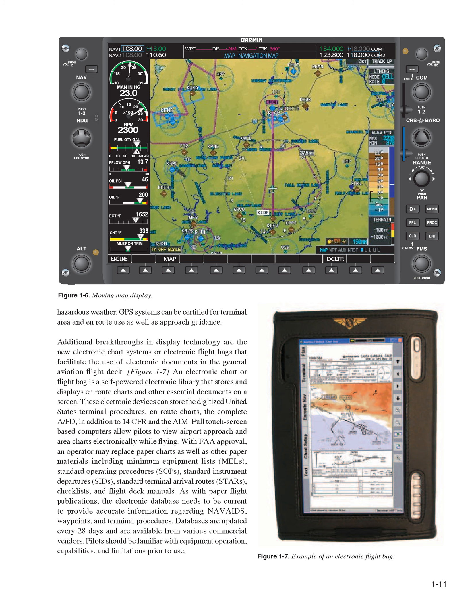These electronic devices can store the digitized United States Terminal Procedures, on-route charts, the complete A/FD, in addition to 14 CFR and the AIM. Full touchscreen-based computers allow pilots to view airport approach and area charts electronically while flying. With FAA approval, an operator may replace paper charts as well as other paper materials including minimum equipment lists, MELs, standard operating procedures, SOPs, standard instrument departures, SIDs, standard terminal arrival routes, STARs, checklists, and flight deck manuals. As with paper flight publications, the electronic database needs to be current to provide accurate information regarding NAVAIDs, waypoints, and terminal procedures. Databases are updated every 28 days and are available from various commercial vendors. Pilots should be familiar with equipment operation, capabilities, and limitations prior to use.